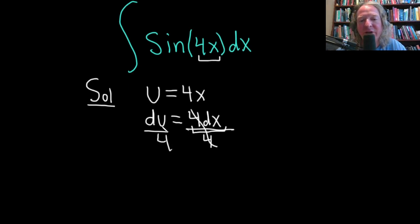So we have du over 4. We can write that as 1 over 4 du, and that's equal to dx. Just like that.